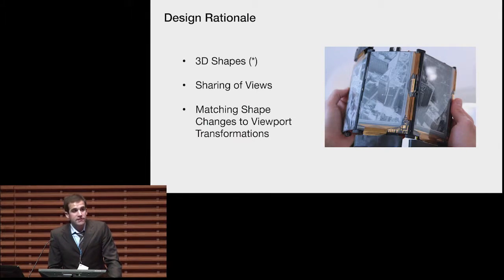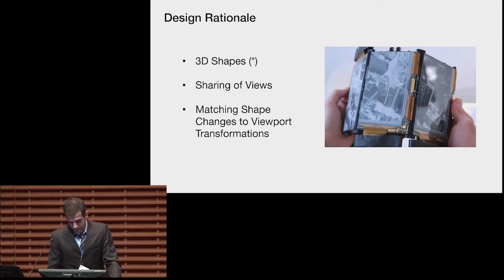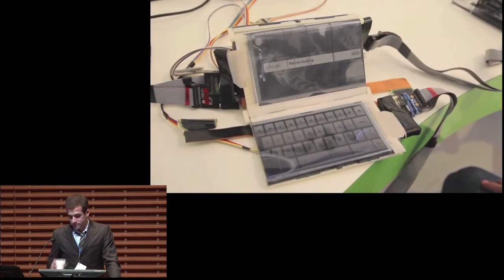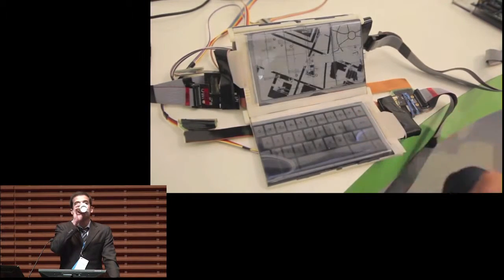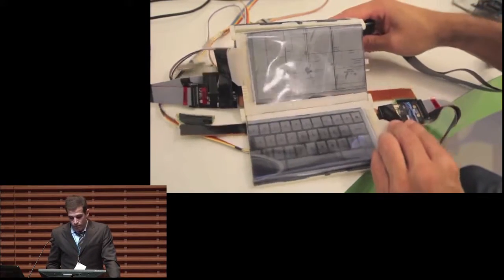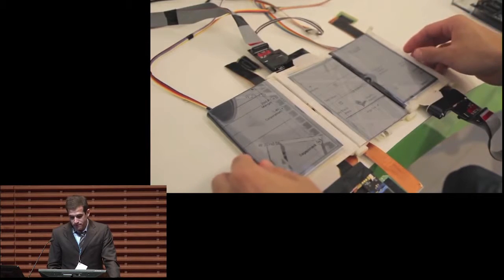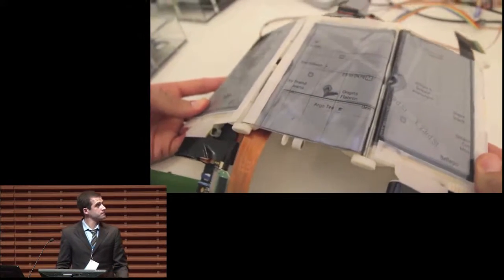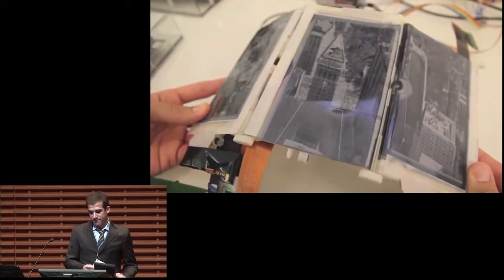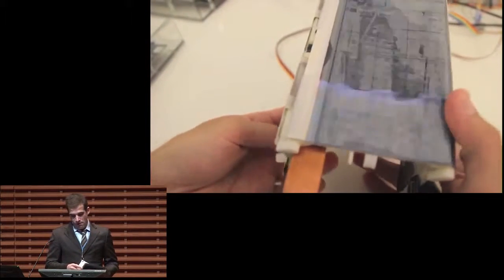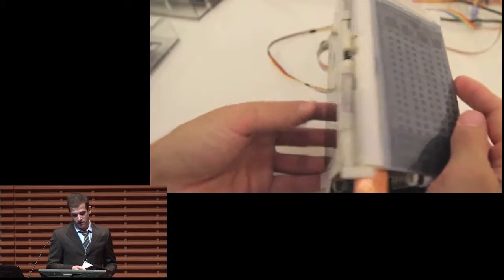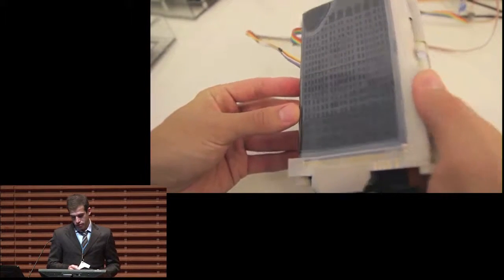We investigated the relative transformation between states as an interaction technique. A brief video demonstrates some features of our prototype. Shaping PaperFold as an ultra notebook pops out a keyboard pane. Here we see a user searching for a building in New York on Google Maps. Flattening the map shows a larger view across three displays. Shaping the map into a convex sphere switches to 3D Google Earth view. Folding PaperFold into the shape of the building picks up the 3D SketchUp model.